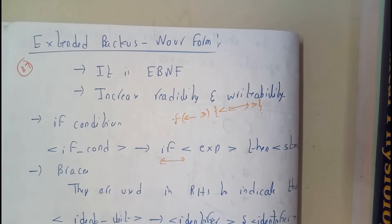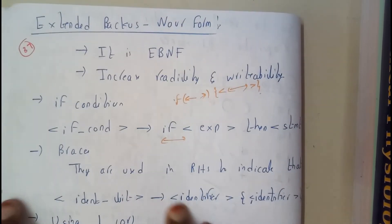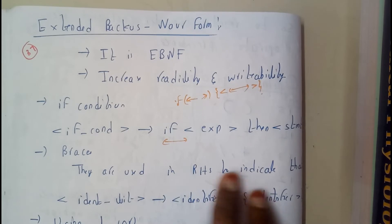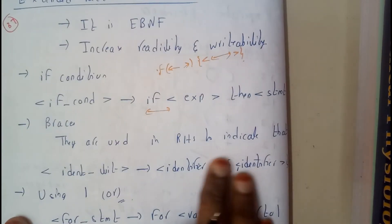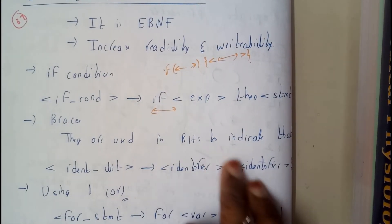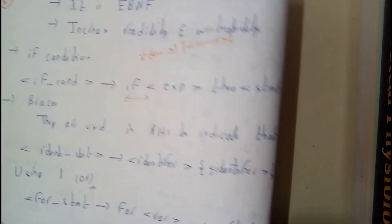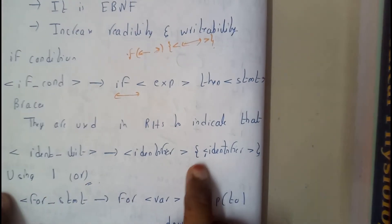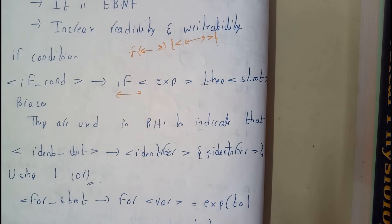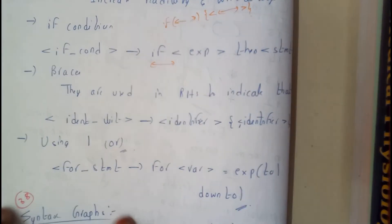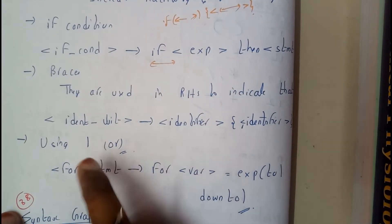Braces are used in RHSI (Right Hand Side Identifier) to indicate the identifier list and separate the list of items. We are using parentheses - flower brackets we call them. Some of this was existing in the previous form as well, which is our normal Backus-Naur Form.